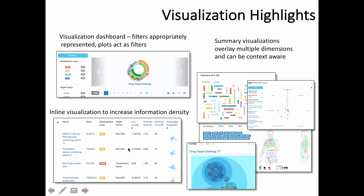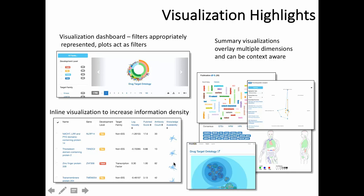To increase information density, one workhorse view is the list of targets in a table with target name, gene, target family, and so on. Since the KMC contains a large amount of information about any individual target but we can't show a table with 100 columns, we use the Harmonizome as a proxy for how much knowledge is available around a target, representing it as a radar chart visualization. This compresses hundreds of columns into one column, and when targets have similar types and amounts of knowledge, their radar charts look similar — enabling visual pattern recognition across a table.